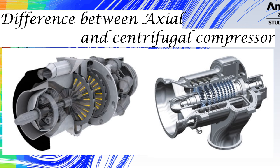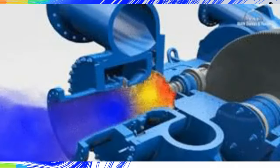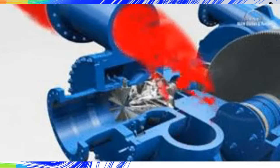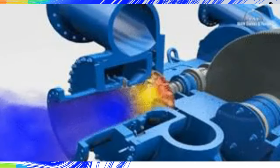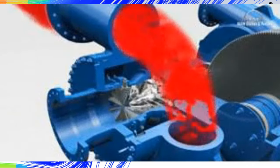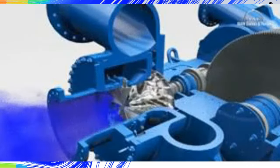Difference between axial flow compressor and centrifugal compressor. Number one: in axial flow compressor, the flow direction is parallel to the axis of the shaft. But in centrifugal compressor, the inlet fluid flow direction is parallel to the shaft and the outlet flow direction is perpendicular to the shaft.